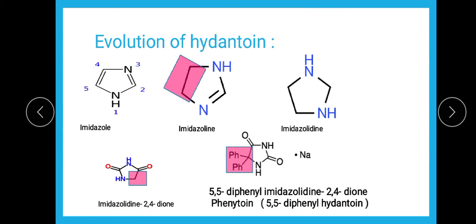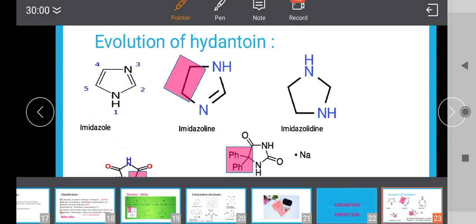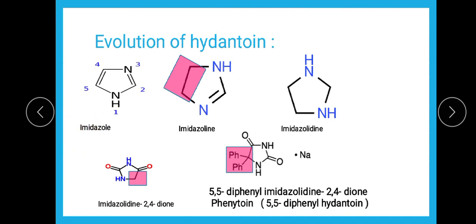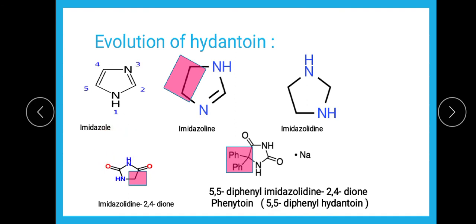So imidazole has 2 nitrogens. The prefix 'imi' helps remember the positions — the letter 'i' appears at the first and third positions in the name 'imi', meaning the nitrogens are at the first and third positions in the structure. The suffix 'ole' is used for 5-membered unsaturated structures. So 'ole' indicates a 5-membered unsaturated ring, 'diazole' means 2 nitrogens, and 'imi' places them at the first and third positions. This is the structure of imidazole.